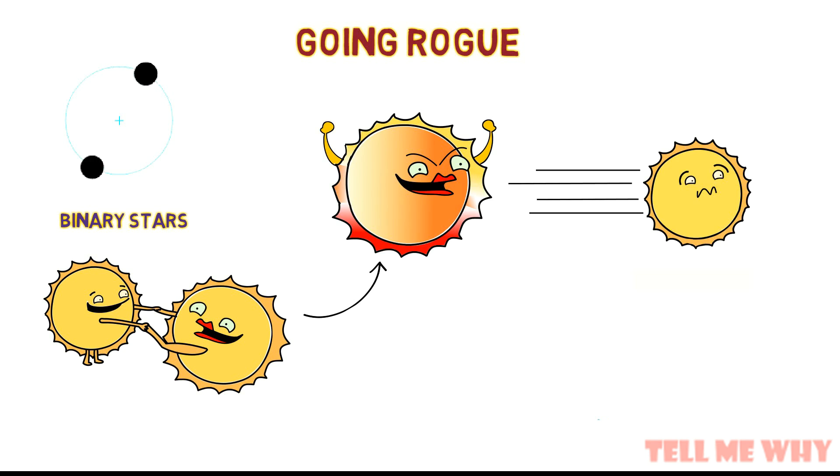When a companion star goes supernova, everything in the vicinity will incinerate and the explosion sends the other star flying extremely fast. Its speed can reach around 1000 km per second which is enough for it to escape the galaxy. This speed is at least thrice that of the current speed of our solar system in space.